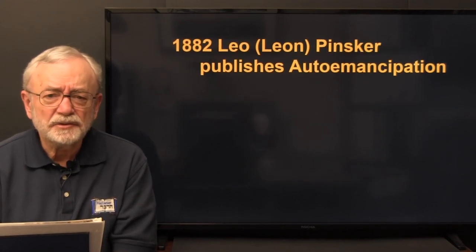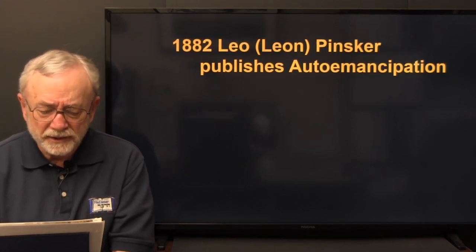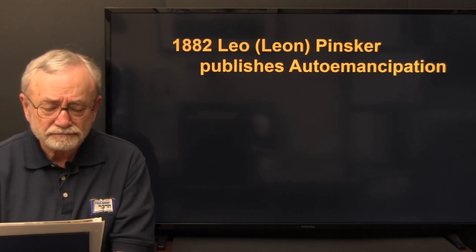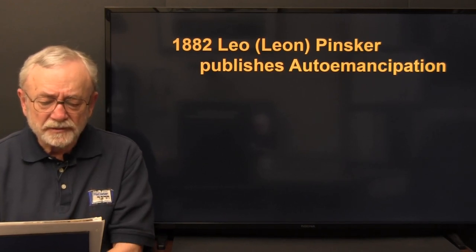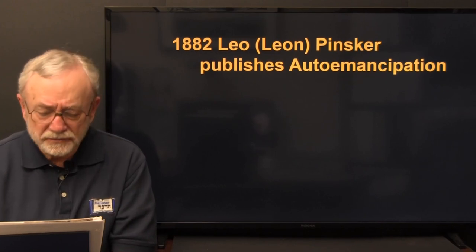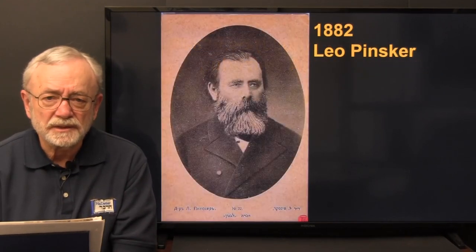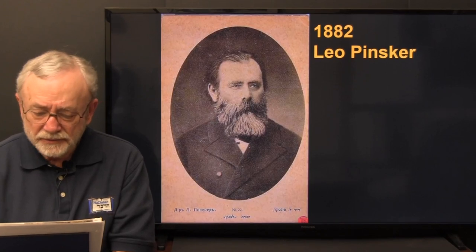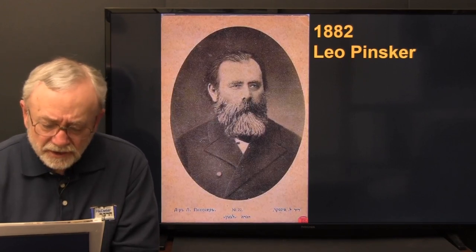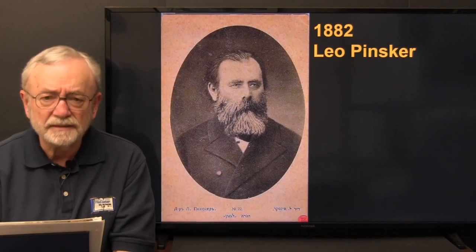That brings us to the new material. We pick up in 1882 with Leo Pinsker publishing Auto-Emancipation. One year after Ben Yehuda and his wife arrived in Israel, another significant Zionist appeared: Leo Pinsker. Pinsker was the son of an enlightened family in Odessa, Russia — now the Ukraine — a seaport on the Black Sea.